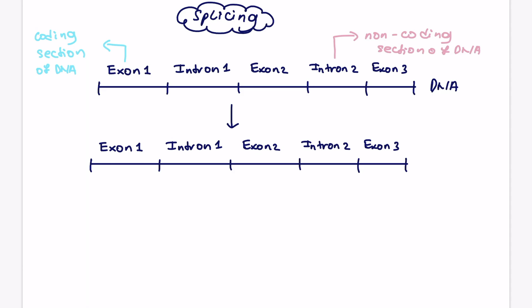When transcription occurs, so let's just label it in a different color, we actually initially produce a pre-mRNA. So pre-mRNA contains exons and introns. And if introns are non-coding sections of DNA, well, there is no point the cell keeping those.